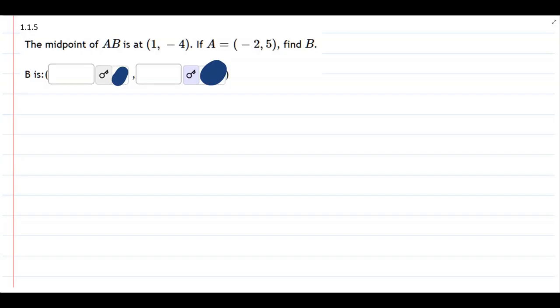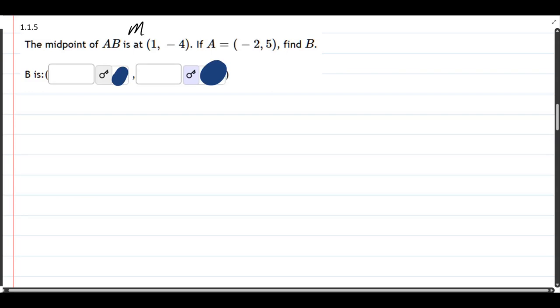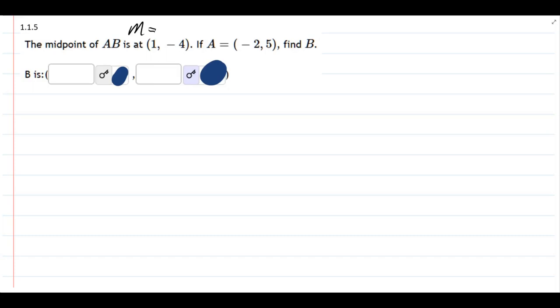This question, we're supposed to find a midpoint. Well, we're supposed to use the midpoint formula, but this one's a little bit strange because they give us the midpoint right here. This is M. They give us A, but what they don't give us is the other endpoint, so find B.